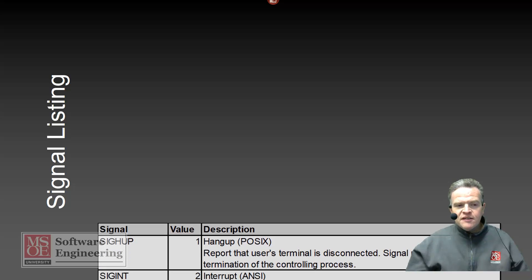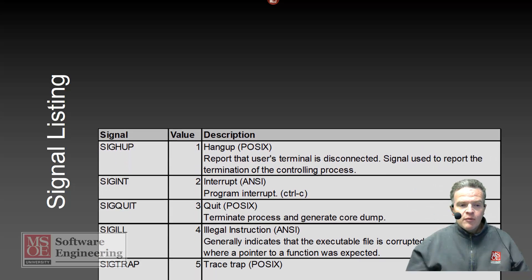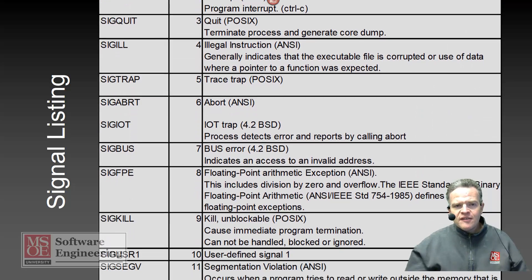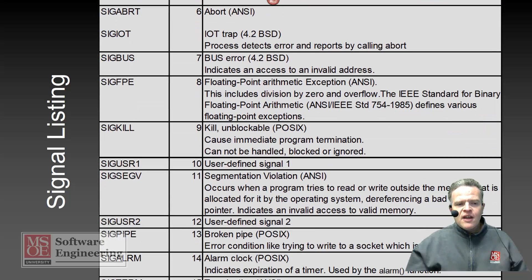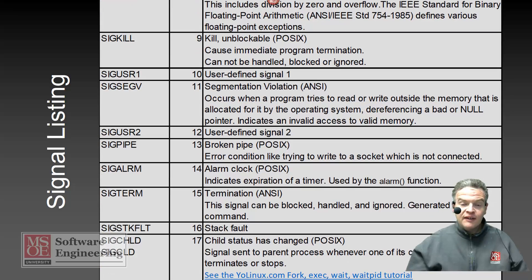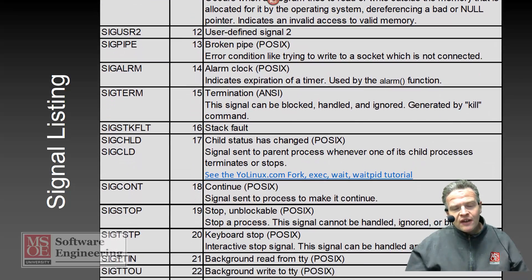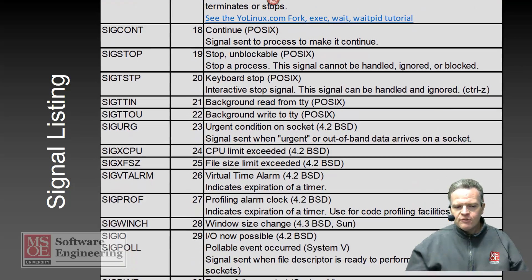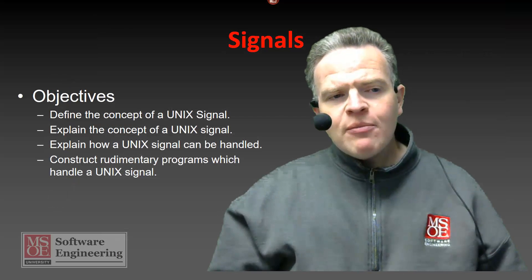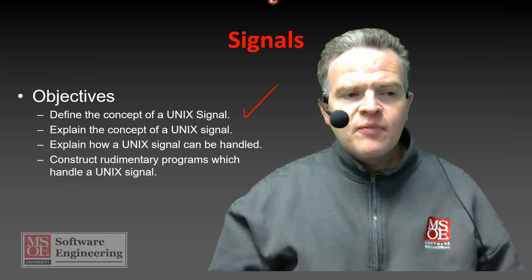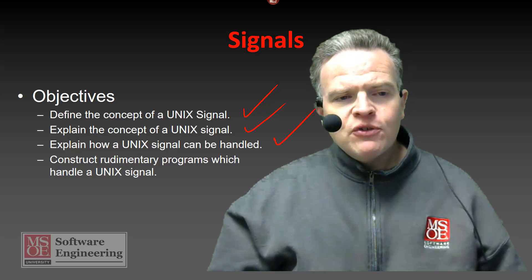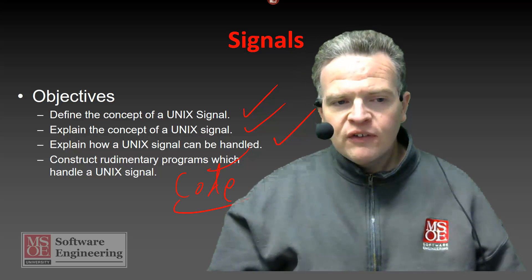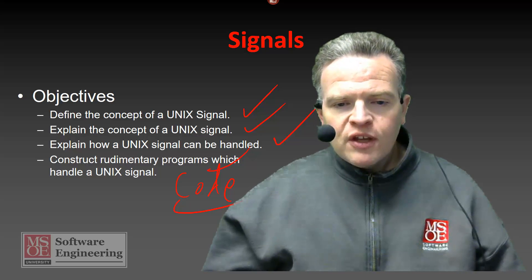There are many different signals in the Unix environment. Each one of these signals has something different that it does and is used for, and each one can essentially be assigned a signal handler. Some are more commonly reassigned; some are not possible to reassign to a given signal handler. At this point you are able to define the concept of a Unix signal, explain what it is, explain how a Unix signal can be handled, and you have seen some code involved in handling a Unix signal. That brings this video to a conclusion.